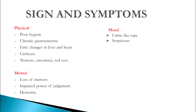The signs and symptoms of chronic poisoning are of three types: physical, mental, and moral. Physical symptoms include poor hygiene, chronic gastroenteritis with diarrhea and nausea, fatty changes in the liver and heart, cirrhosis of the liver, tremors, insomnia, and redness of the eyes. Mental symptoms include loss of memory, impaired judgment, and dementia. Moral symptoms include criminal behavior such as assault, and the person may become suspicious of everything around them.